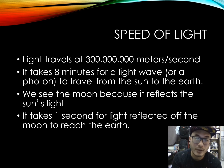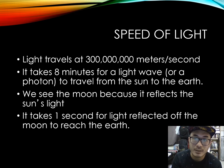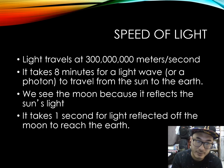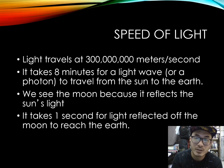When you have wavelengths, you have speed. What is the speed of light? Light travels at 300 million metres per second. It takes up to eight minutes for a light wave or a photon to travel from the sun to the earth. We see the moon because it reflects the sun's light, and it takes one second for light reflected off the moon to reach the earth.